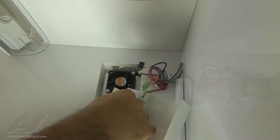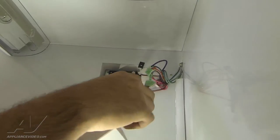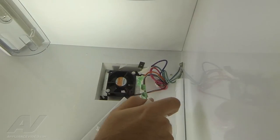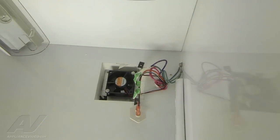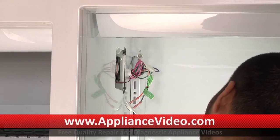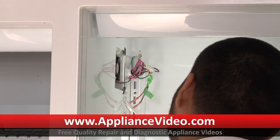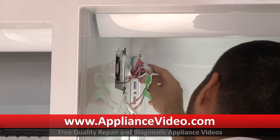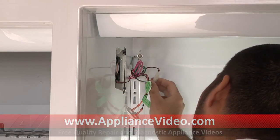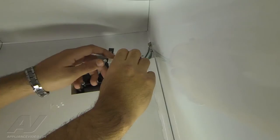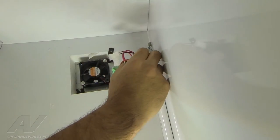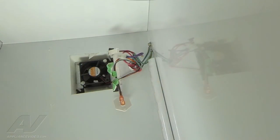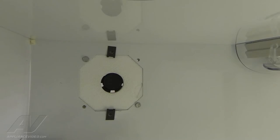Before we remove the fan motor with the bracket, we want to disconnect the Molex connector in the fresh food section. To do so, squeeze the tab and pull off. To remove the bracket that the fan motor sits into, remove the two quarter-inch screws in the freezer section that are mounting the fan bracket.